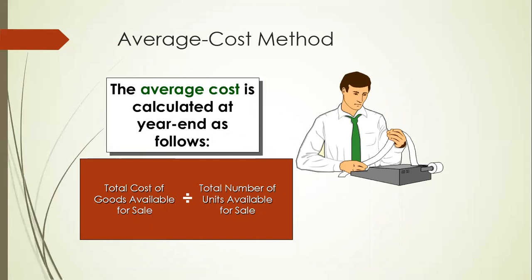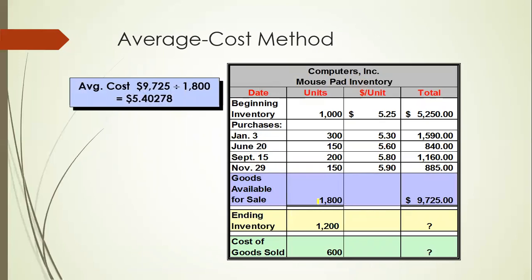The second method is the average costing method. In the average costing method, you take the total cost of goods available for sale divided by the total number of units available for sale to get the average cost. Using the same example, you have 1,800 units and a total cost of $9,725. Dividing $9,725 by 1,800 gives an average cost of $5.4025.